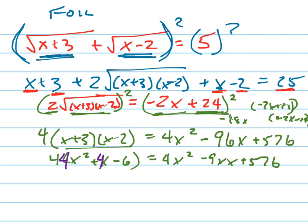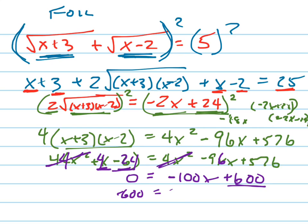So the 4x's on each side are going to cancel out when I subtract. Let's move everything to the right side, subtract 4x, that's going to be -100x. Add 24 and that's going to be +600, that's set equal to zero. Now I subtract 600 and I divide by 100 and I get x equals 6.